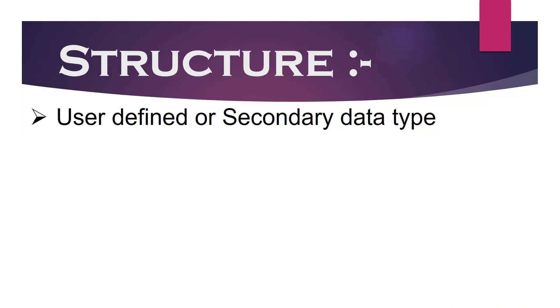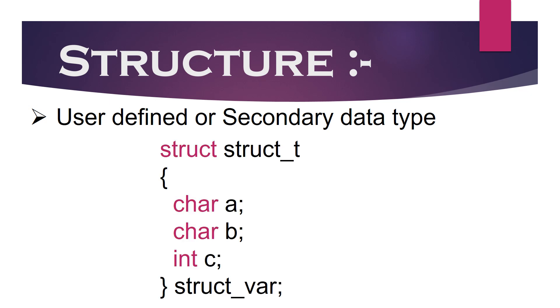We already know that the structure is a user defined or secondary data type which is derived from primary data type. Let's define a structure type which contains two character and one integer member. Upon creating an object of this structure, compiler allocates contiguous block of memory to its structure members.